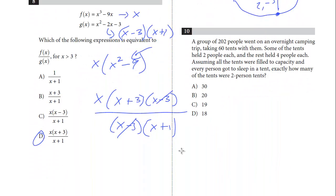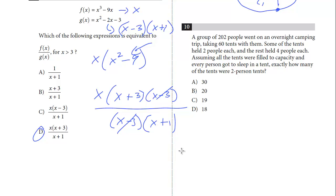And let's do the last question, number 10. A group of 202 people went on an overnight camping trip taking 60 tents with them. Some of the tents held 2 people each and the rest held 4 each. Assuming all the tents were filled to capacity and every person got to sleep in a tent, exactly how many of the tents were 2-person tents? This is a system of equations.